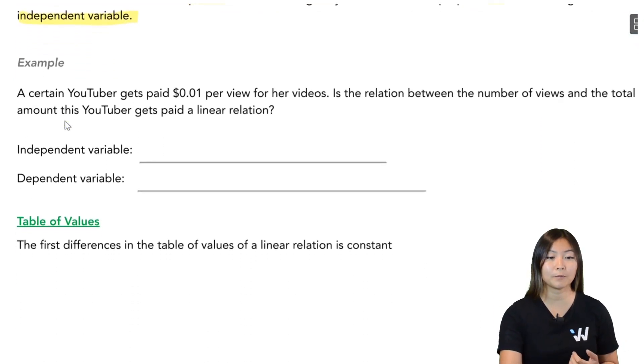So let's take a look at an example here. Let's say you're a YouTube star, and YouTube pays you about one cent, so $0.01 per view for this person's video. Is the relationship between the number of views and the total amount this YouTuber gets paid a linear relation? Now, first of all, we have to identify the variables here. There's two of them. There's the number of views and how much they get paid. Which one depends on the other?